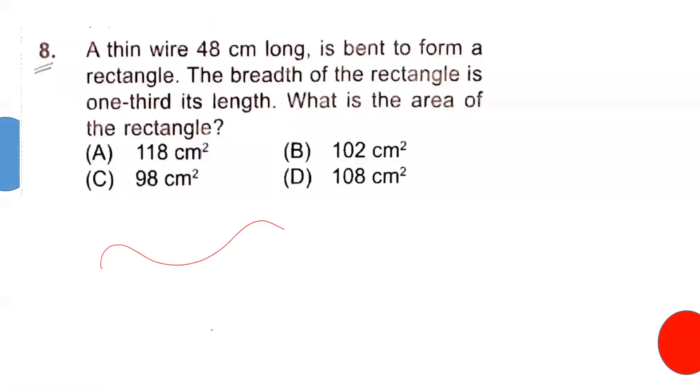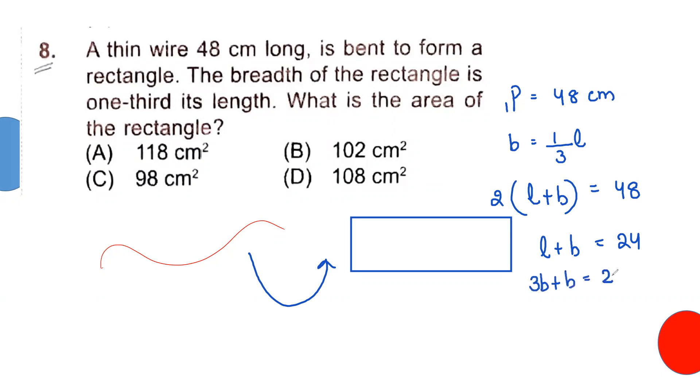Now see if this was a wire bent to a shape of rectangle. The complete wire is used to make a rectangle, so perimeter of rectangle will be 48 centimeter. Breadth of the rectangle is one third of its length. So 2(L plus B) equals 48, giving L plus B equals 24. Then L equals 3B. So 3B plus B equals 24, giving 4B equals 24, B equals 6. The moment you got B equals 6, L equals 3 times B, that is 18. So 18 times 6 gives you 108. Your answer comes 108.